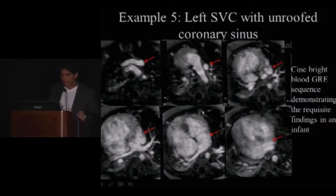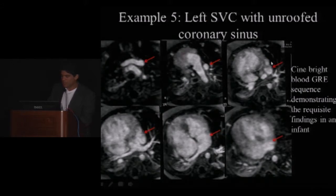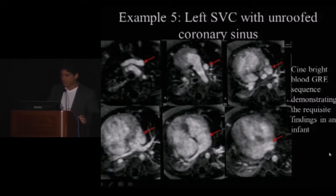Another example involves a left-sided SVC. On the Cine Bright Blood GRE sequence, it demonstrates the requisite findings where the left-sided SVC opens into the left atrium. This is an unroofed coronary sinus, and the technique demonstrates the anatomy very well.